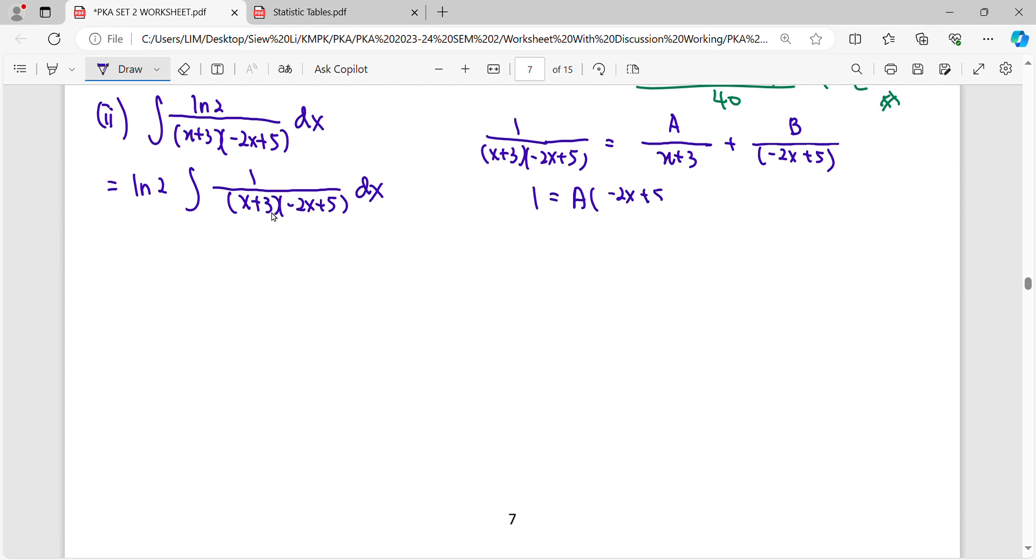Then to get the same denominator, A will need to multiply with (-2x+5), and B multiply with (x+3) so that we can get one equation to find A and B. Let x to be your roots. What's the root from the factor here? It will be 5/2. -2x+5 equals zero, so the roots will be -5/-2, which is 5/2.